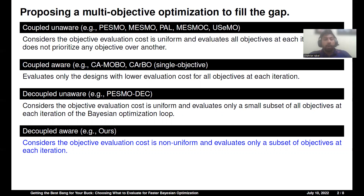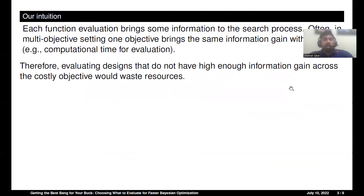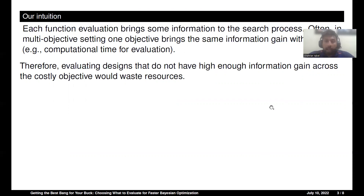For example, optimizing prediction error and energy consumption of a deep neural network. Our intuition is that each function would bring some information to the search process. One objective would bring the same information gained with lesser cost. Therefore, evaluating designs that do not have high enough information gained across the costly objective would waste resources, and we can save resources if we can avoid that.